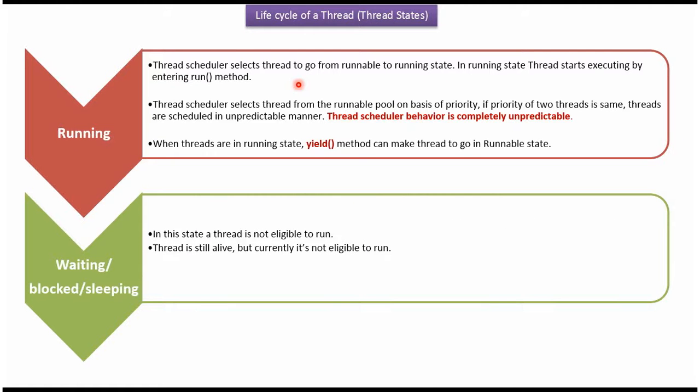The thread scheduler selects the thread to go from runnable state to running state. In running state, the thread starts executing by entering the run method. The thread scheduler selects the thread from the runnable pool on the basis of priority. If the priority of two threads is the same, the threads are scheduled in an unpredictable manner because thread scheduler behavior is completely unpredictable.